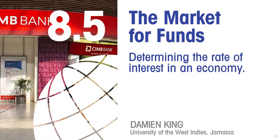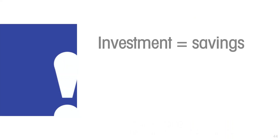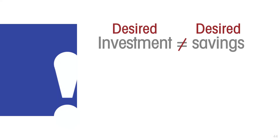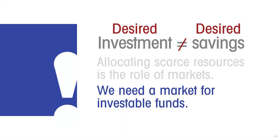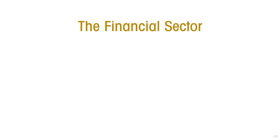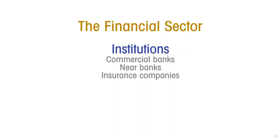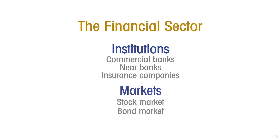The market for funds determines the rate of interest in an economy. We know that in any economy the total amount of actual investment has to be equal to the total amount of savings, but that is not to say that desired investment has to equal desired savings. Allocating scarce resources is the role of markets, so we need a market for investable funds. The financial sector intermediates between all the savings and all the needs of investors through its institutions — commercial banks, near banks, and insurance companies.